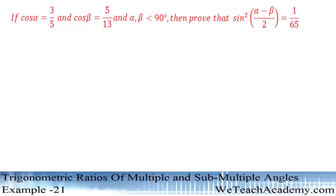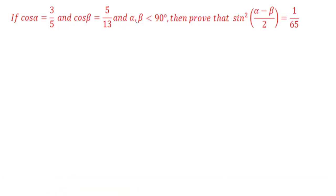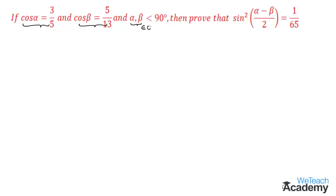Hey guys, welcome to VDCH Academy. In this section we are going to deal with an example. If cos α = 3/5 and cos β = 5/13, and α, β are less than 90 degrees, then prove that sin²((α − β)/2) = 1/65. First, let us consider the given information: cos α = 3/5, cos β = 5/13, and since α, β < 90°, both angles belong to quadrant 1.